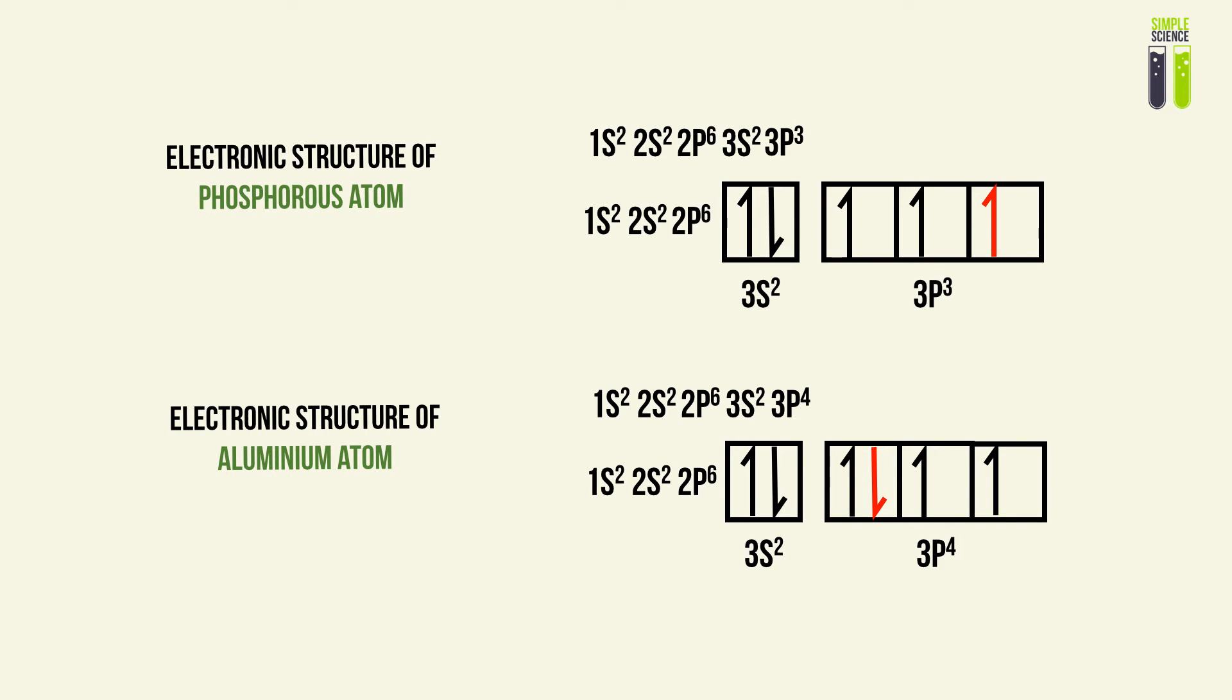I've highlighted the outermost electron in red. The outermost electron of the phosphorus atom lies by itself. It's not paired with any other electron. Whereas the outermost electron of aluminum is paired with another electron in its sub-shell.